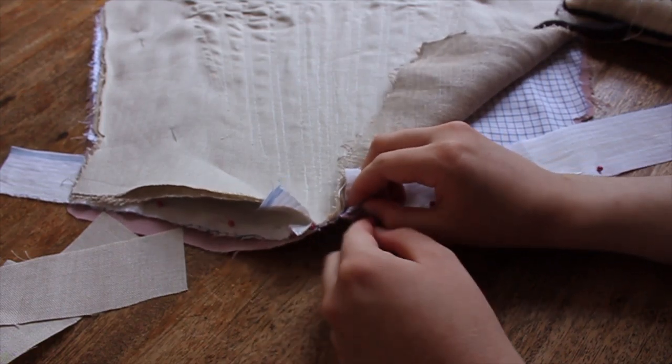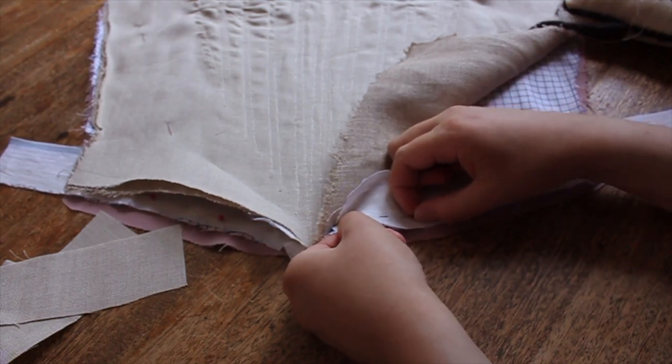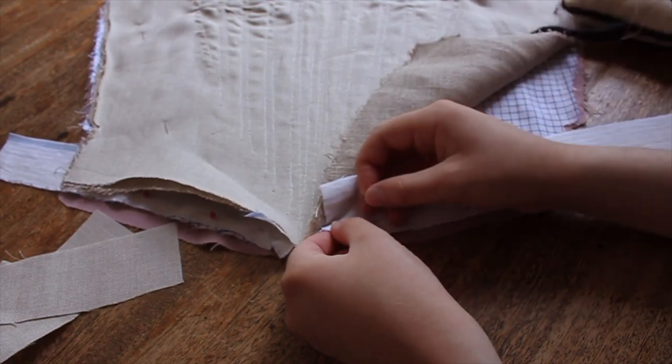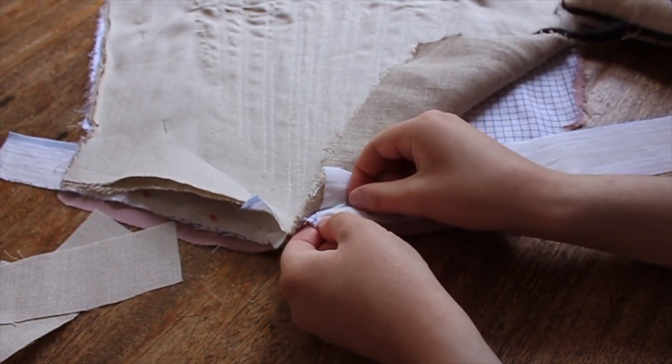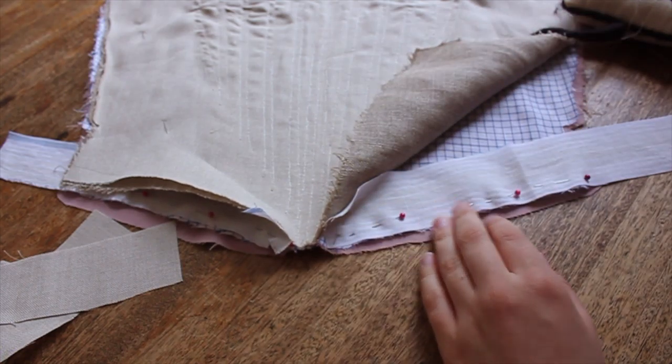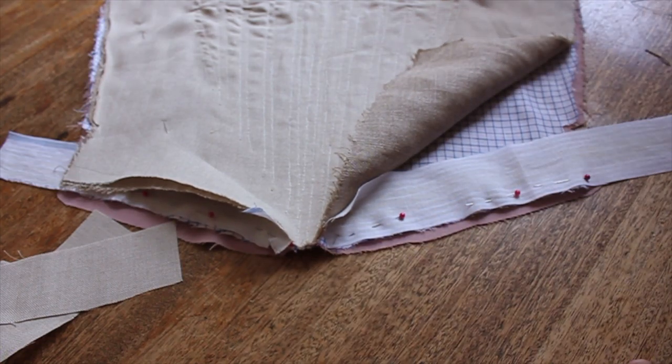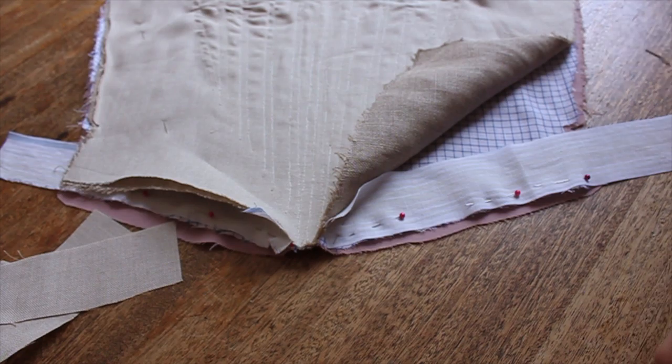However, since this pattern is tried and true, I only added seam allowance to the sides, forgetting that stitching channels often makes the fabric slip and slide. Because of this, my wool fashion fabric no longer lined up with my linen underlayers around the bottom of the stays.